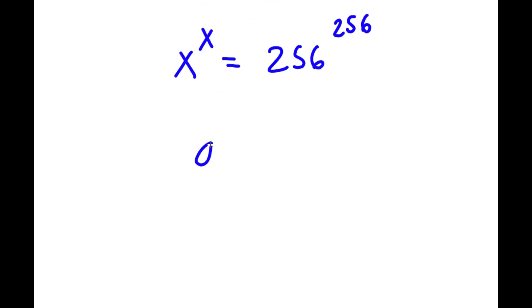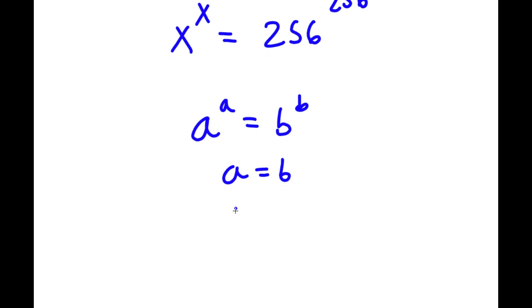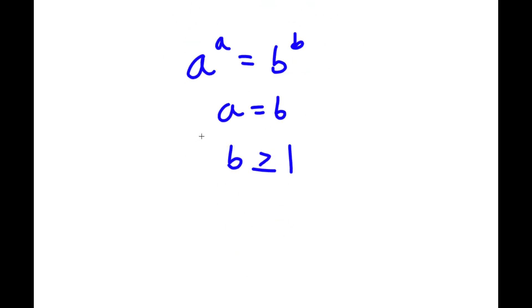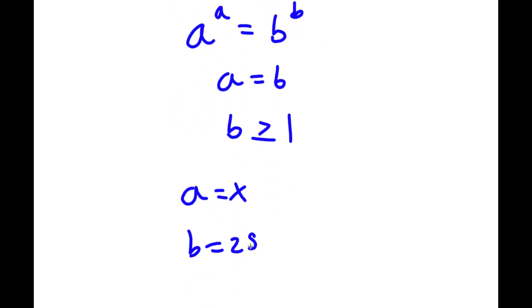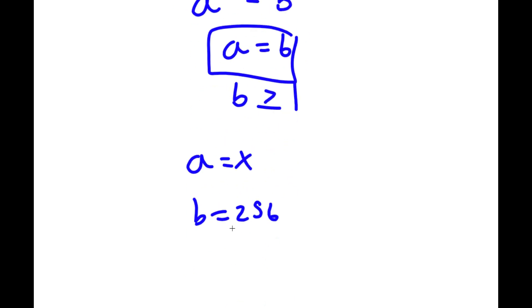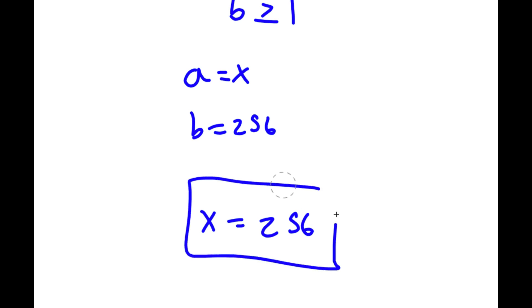Now, if I have something in the form a to the power of a is equal to b to the power of b, then this means that a is equal to b. However, this is only true if b is greater than or equal to 1. So in this case, a would be x and b would be 256. And is 256 greater than or equal to 1? Yes, it is. Meaning we can write this in the form a equals b. So x is equal to 256. That is my answer.